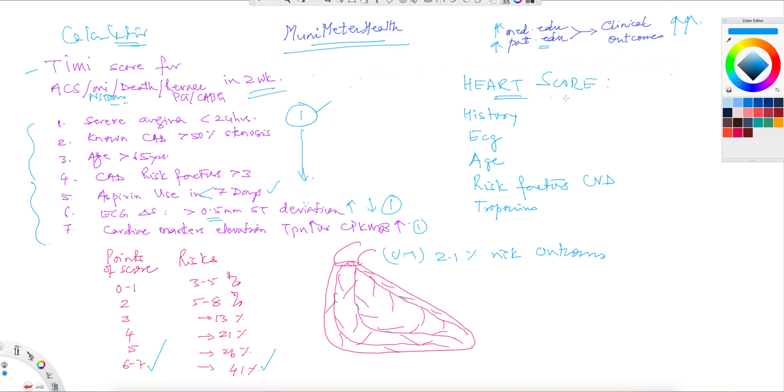There's a comparable score that came out, also called the heart score. H for history, E for ECG, A for age, R for risk factors and T for troponin. It's very similar to this one. And again, it gives you a different way of scoring though.